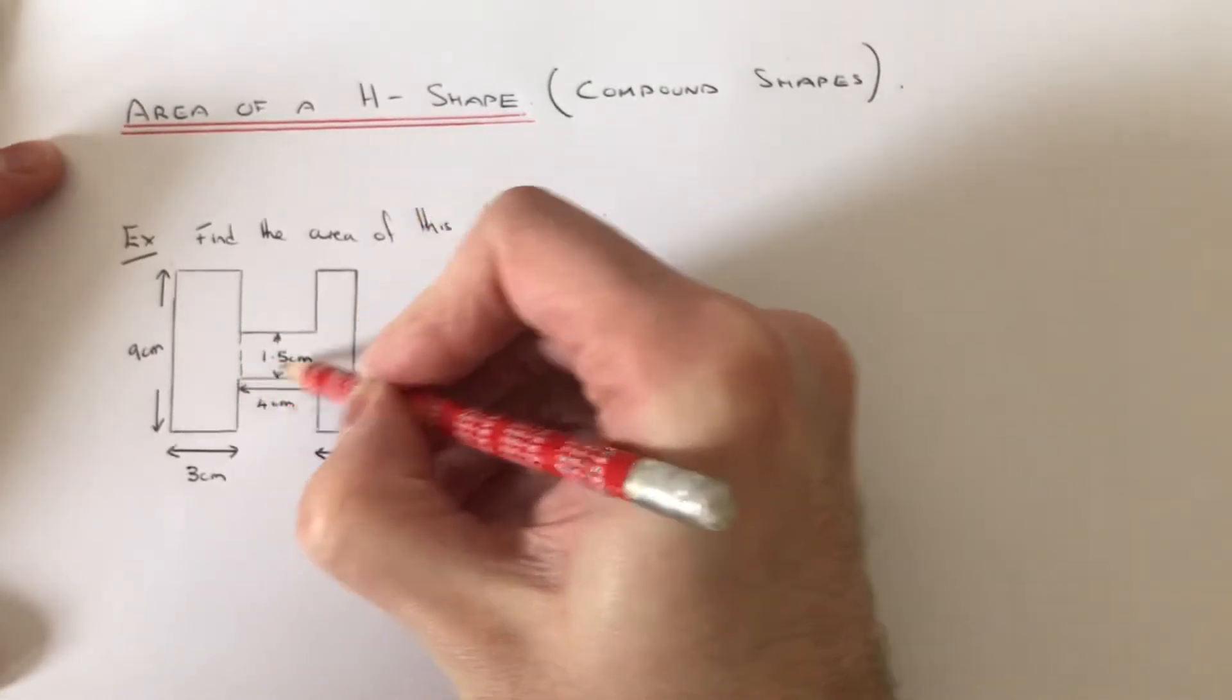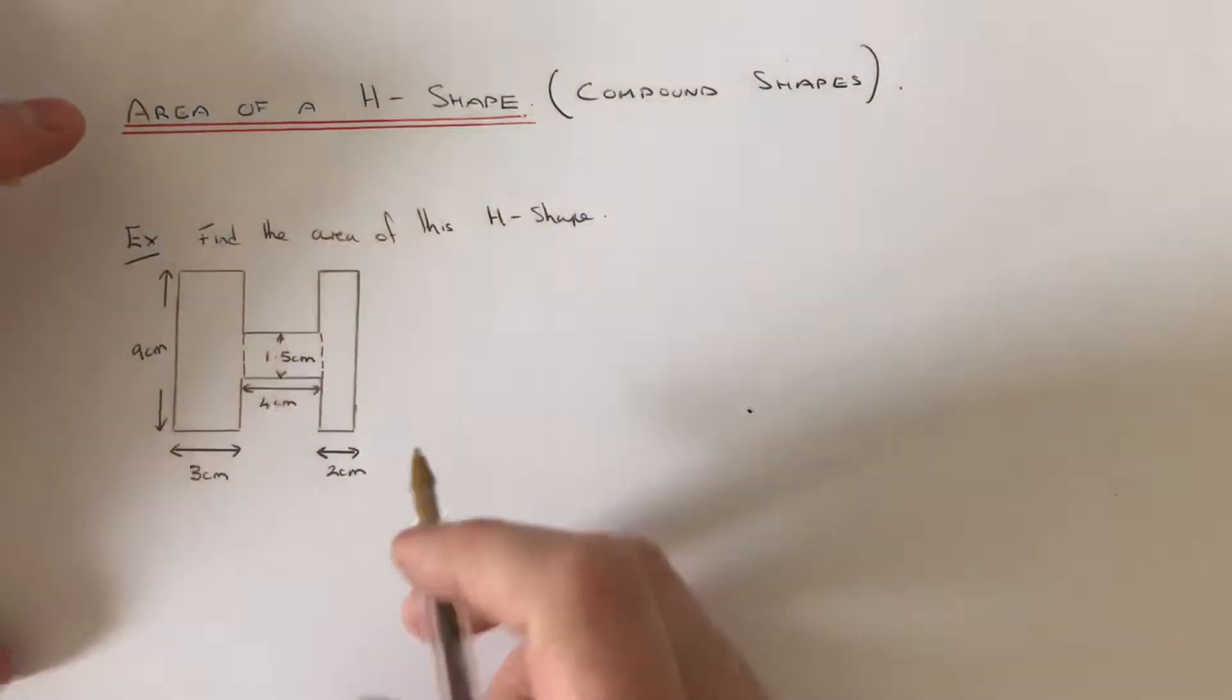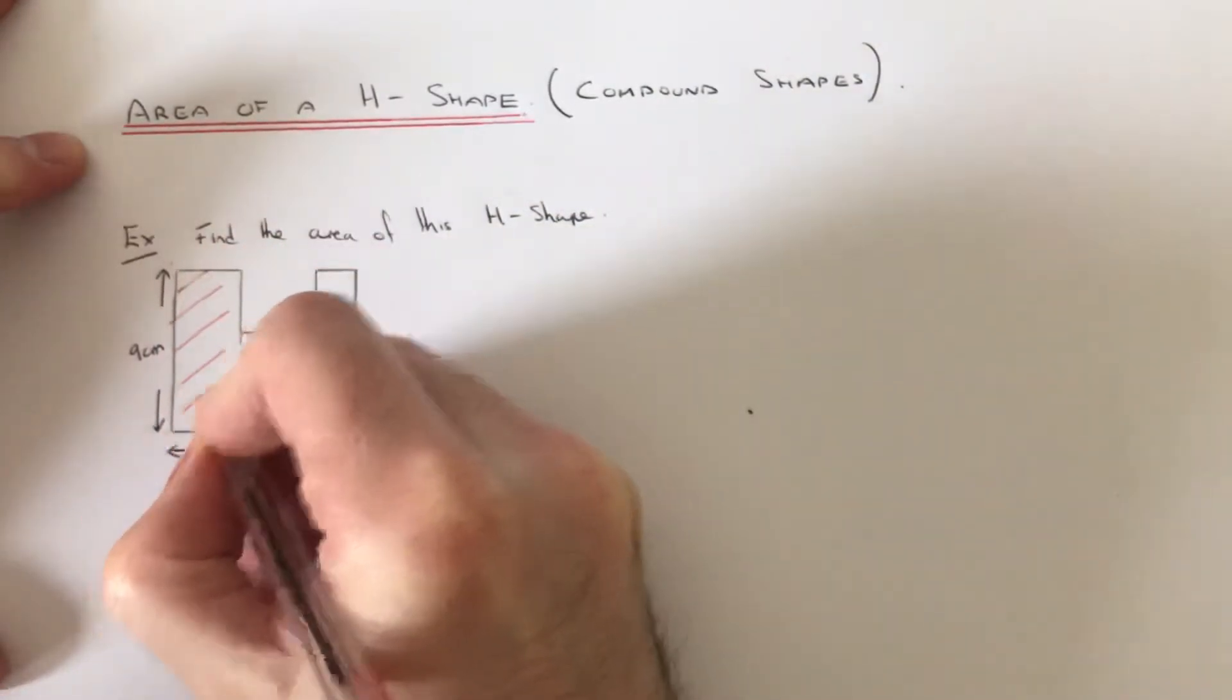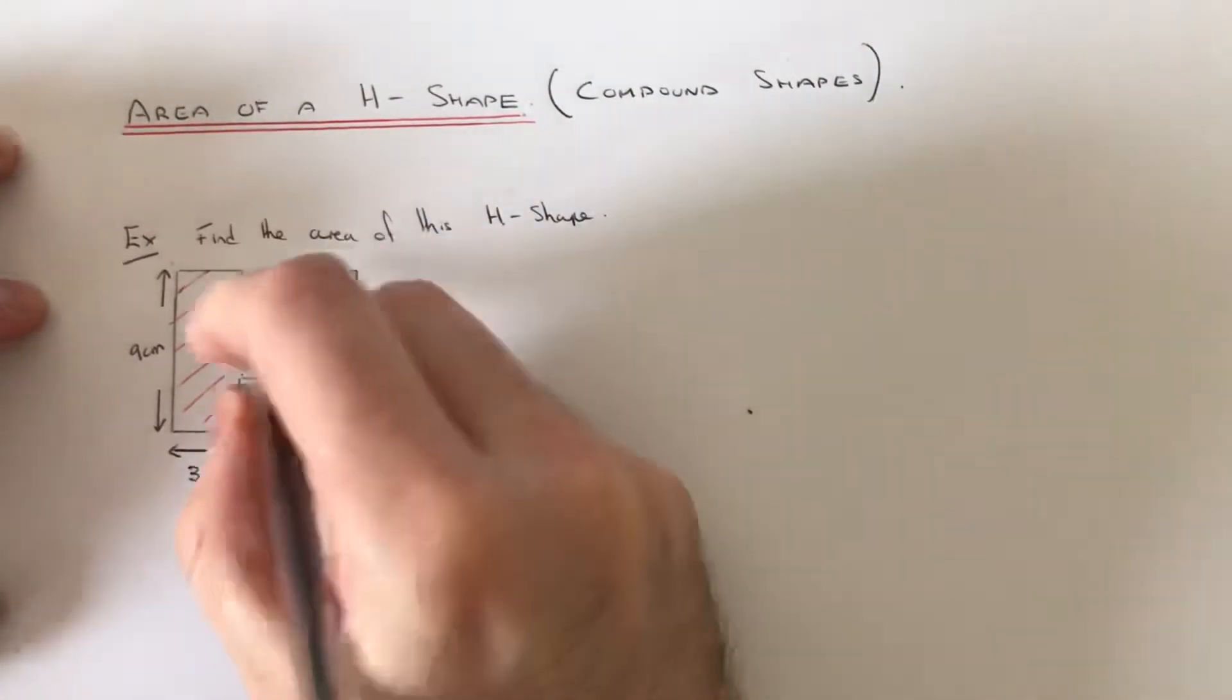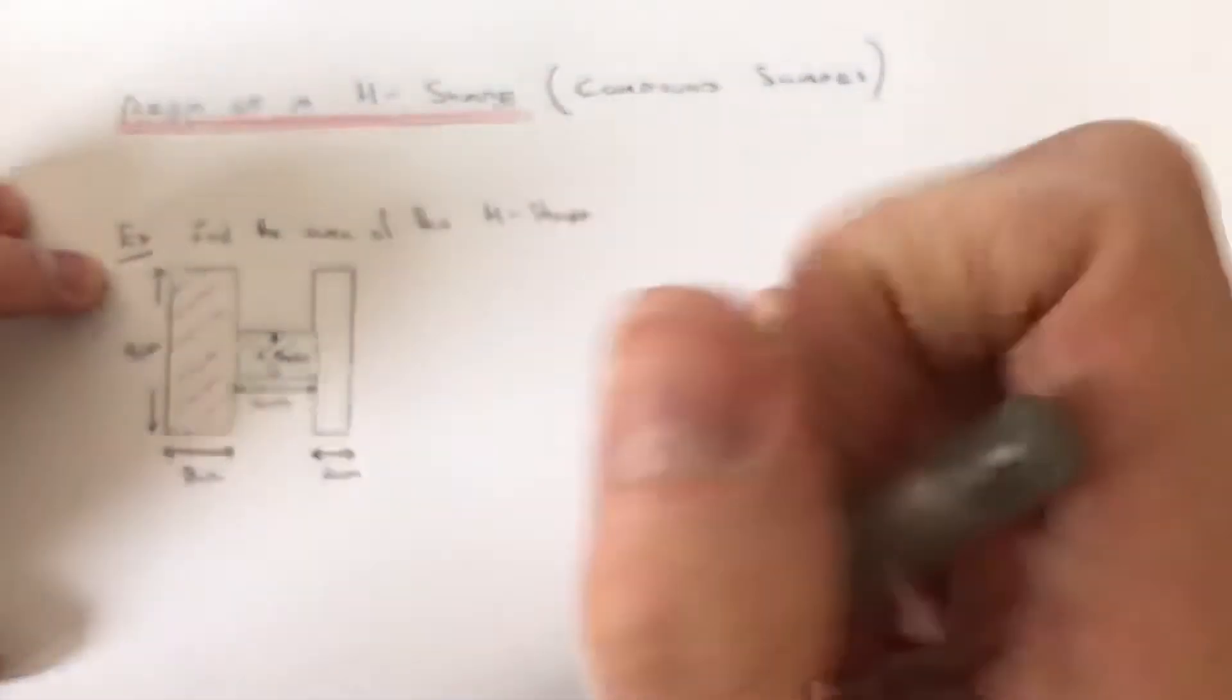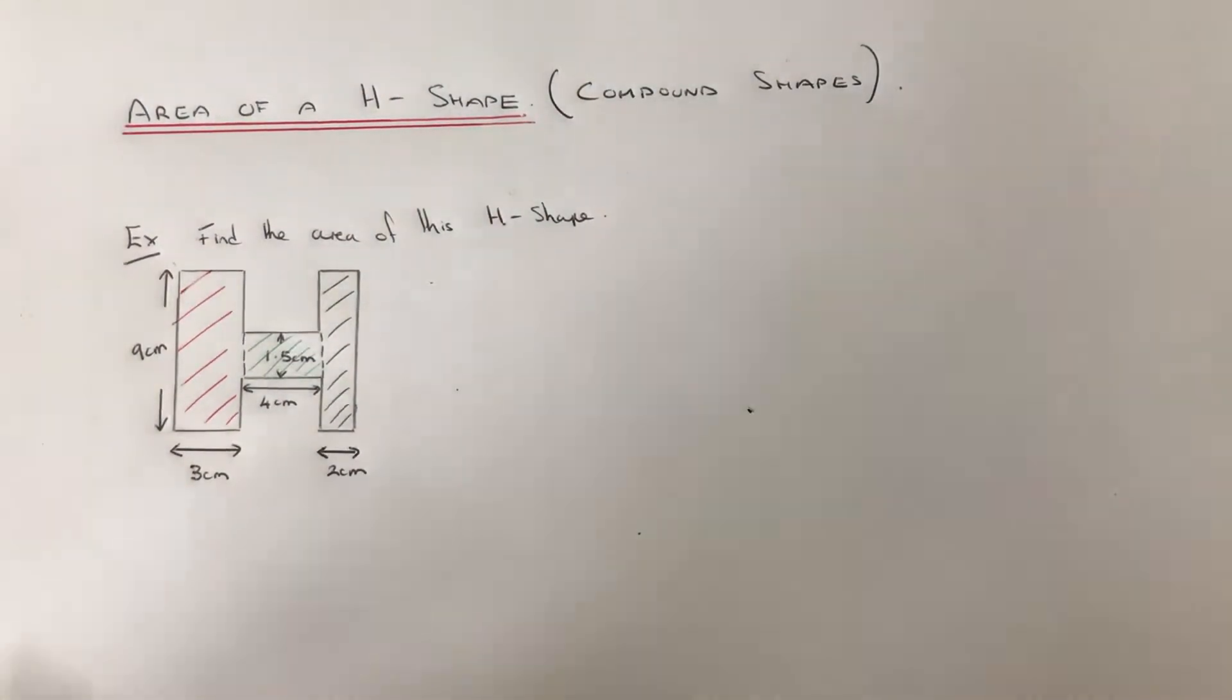One down here and one down here. So we'll shade in the first rectangle in red, second one in green, and we'll do the third one in black. So it's just the case of working out the area of each one of those three rectangles and adding those together.